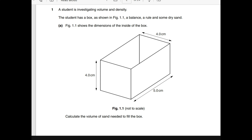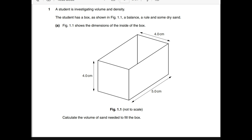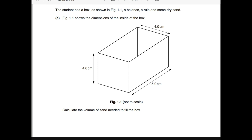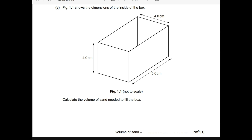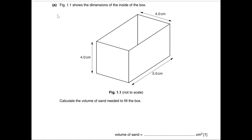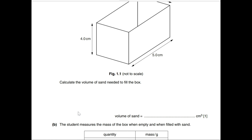Here's another question showing a regular shape. Remember the previous question dealt with an irregular shape — now there's a regular shape. A student is investigating volume and density. The student is given a box as shown in figure 1.1, along with a balance, a ruler, and some dry sand. Calculate the volume of sand needed to fill the box.